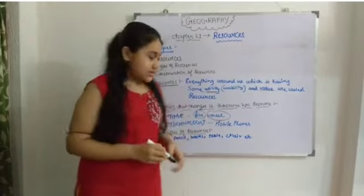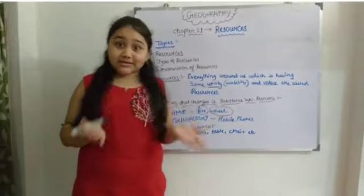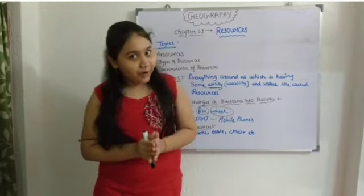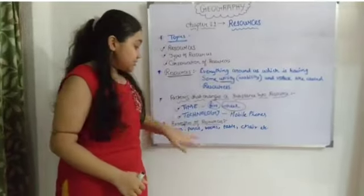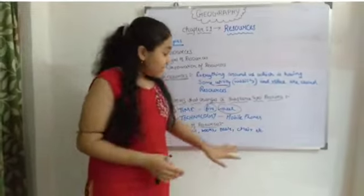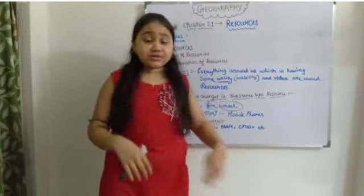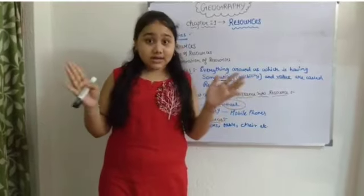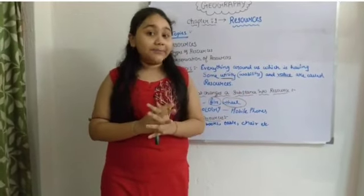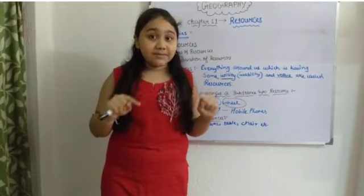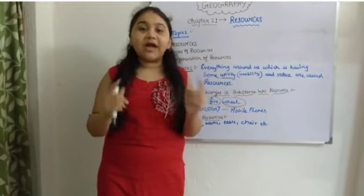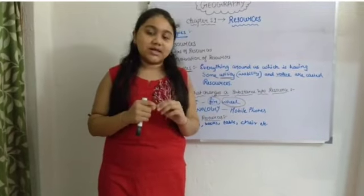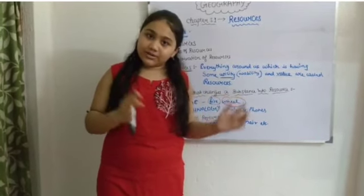Examples of everyday resources include a pen — without a pen we would obviously face problems — pencil, books, table, chair, school bag, tiffin box, water bottle. Everything around us is a resource because it has usability in our daily life and obviously some value to us.